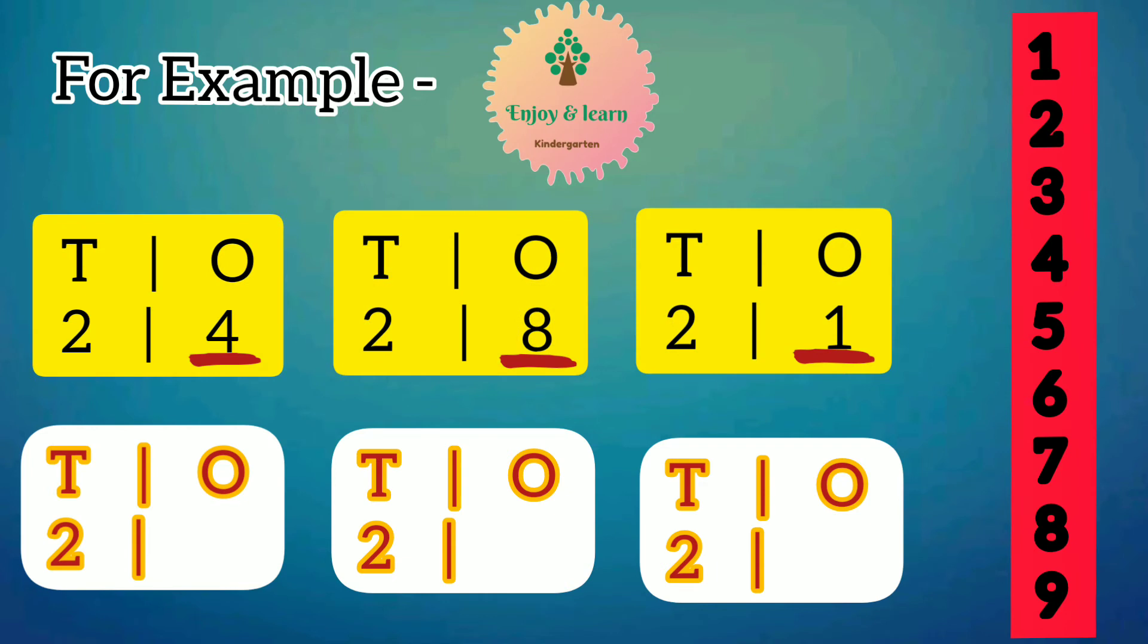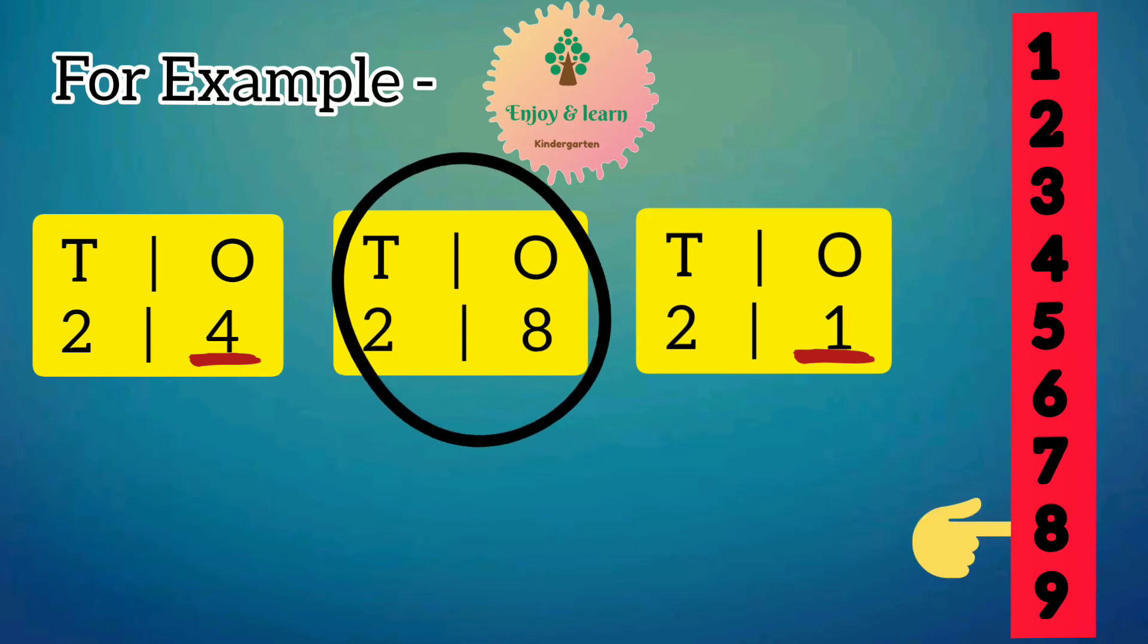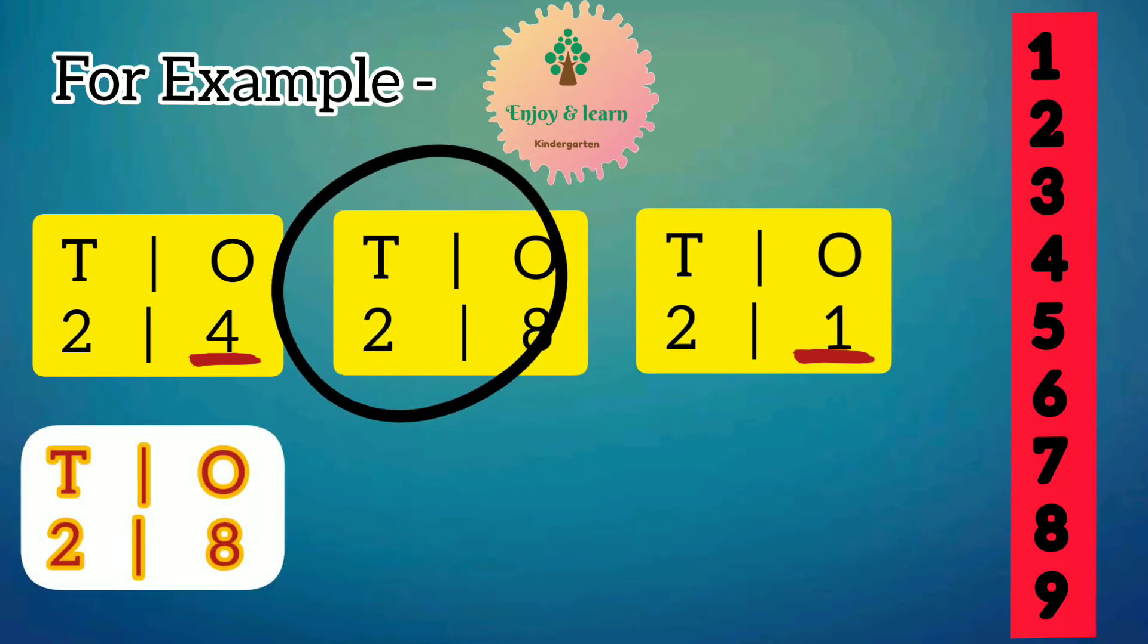So from 4, 8, and 1, number 8 is the greatest. So number 28 will be kept at first.